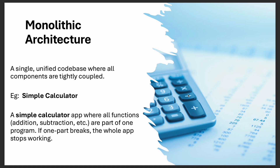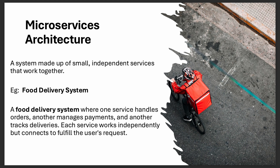Second is microservices architecture — a system made of small, independent services that work together. For example, a food delivery system where one service handles orders, another manages payments, and another tracks deliveries. Each service works independently but connects to fulfill the user's request. That's the microservices architecture — we split the system into microservices.